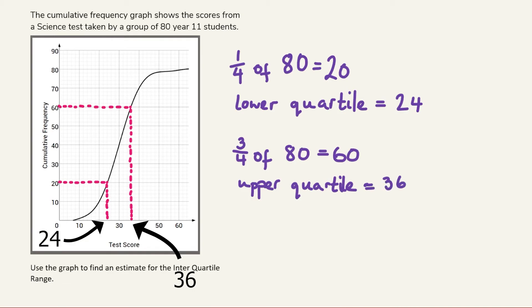The upper quartile for the test scores was 36 and the lower quartile was 24. To estimate the interquartile range from a cumulative frequency diagram, all you have to do is subtract the lower quartile from the upper quartile. In this case that is 36 take away 24, which is 12. So an estimate for the interquartile range from this cumulative frequency diagram is 12.